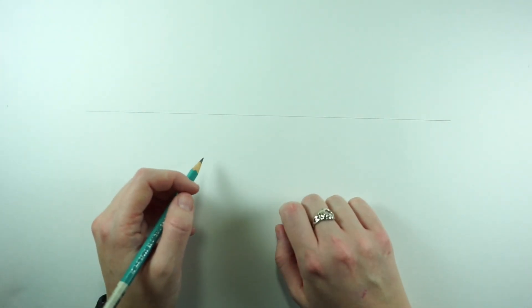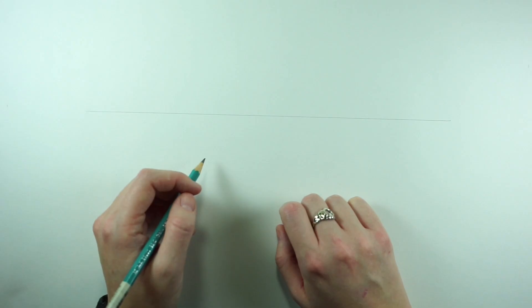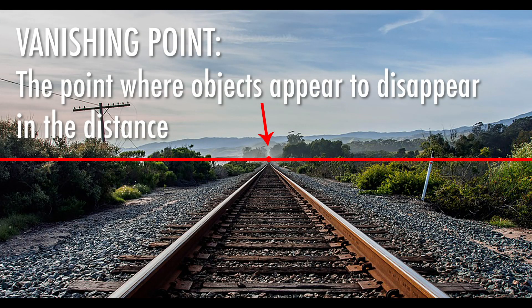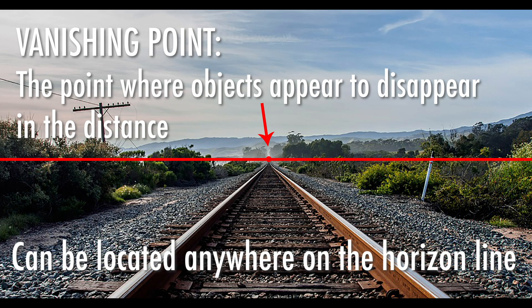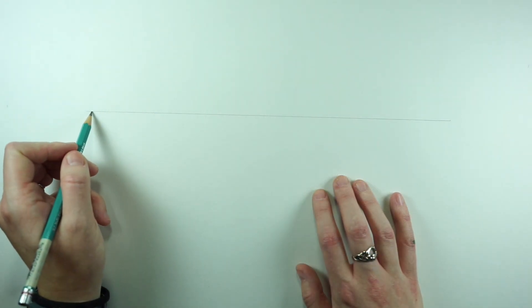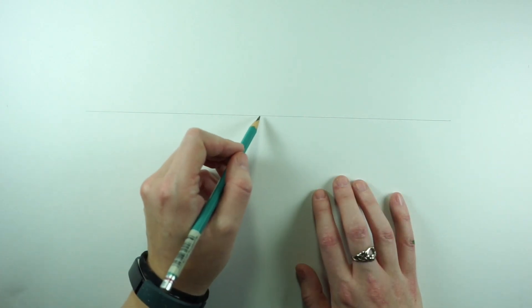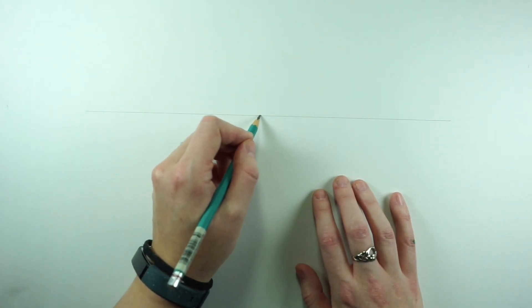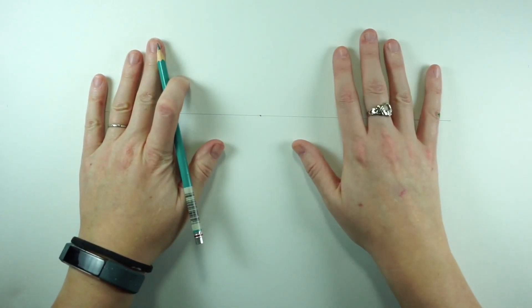The next thing we need is something called a vanishing point. A vanishing point is the point where objects appear to disappear in the distance. The vanishing point is always on the horizon line and can be anywhere on it — way off in a corner or right in the middle. For our purpose, I'm going to put it in the middle.